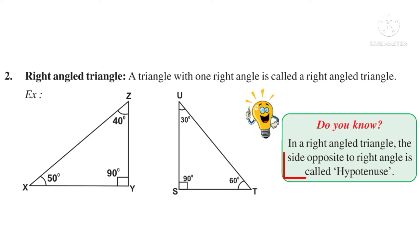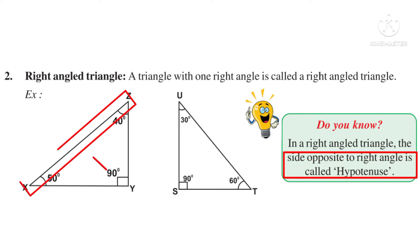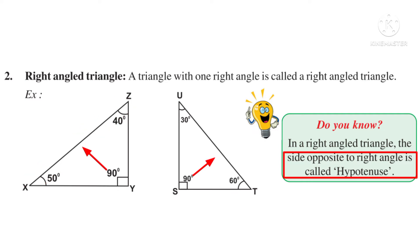In triangle UST, the side opposite to the right angle is called the Hypotenuse. In triangle XYZ, the side XZ opposite to angle Y is called the Hypotenuse. In triangle UST, the side UT opposite to angle S is called the Hypotenuse.